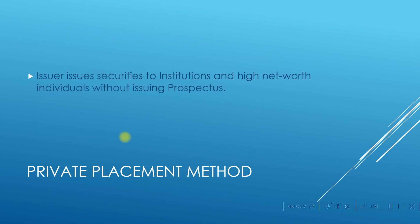Next is the private placement method. Here the issuer issues securities to institutions and high net worth individuals without issuing a prospectus. Using the help of share brokers, securities are offered to large buyers. Securities may also get sold to issue houses who in turn resell to large institutions and high net worth individuals. The expenses are generally borne by the institutional investor. The disadvantage is that shares can get accumulated in fewer hands, limiting common investors of an opportunity to subscribe to the public issue.